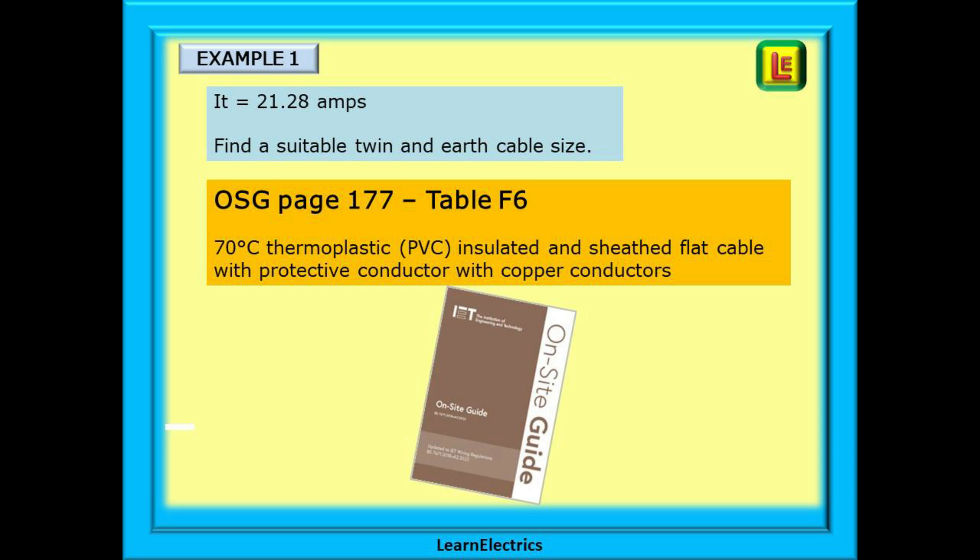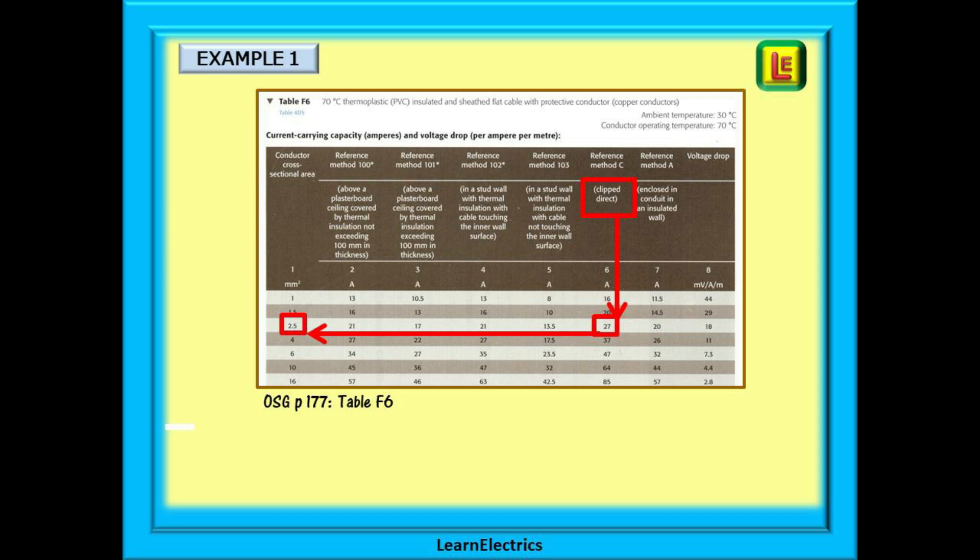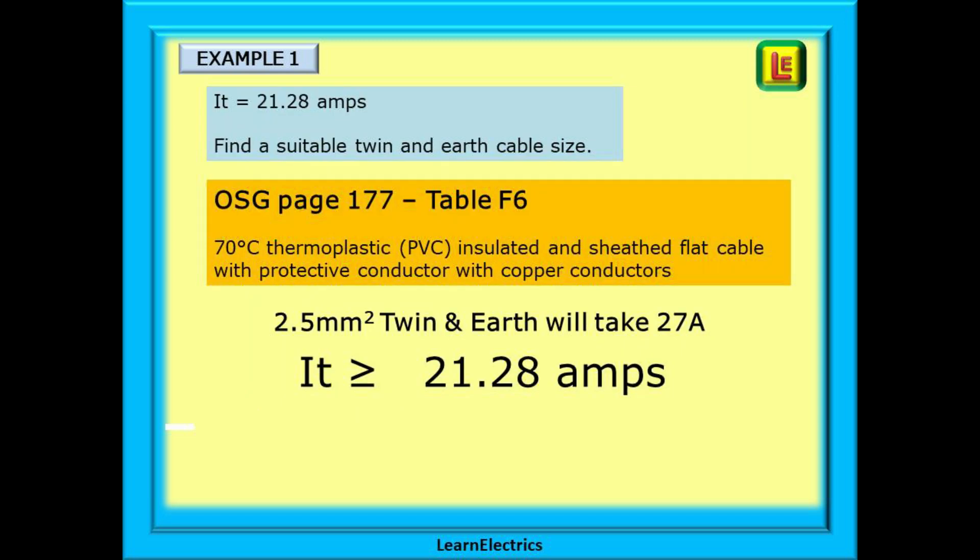Look in the on-site guide, page 177 and at table F6. This table is specifically for 70 degree centigrade thermoplastic, PVC, insulated and sheathed flat cable with a protective conductor with copper conductors. In other words, our standard twin and earth. This is table F6. Find clipped direct along the top, follow the column down until you find a value that is equal to or greater than 21.28 amps. We find this is 27 amps. Now, move to the left and read off the conductor size which is 2.5 millimeters. For this circuit, we must choose 2.5 millimeter twin and earth cable. So, 2.5 millimeter twin and earth would take 27 amps and this means that IT is in fact greater than 21.28 amps. Job done.